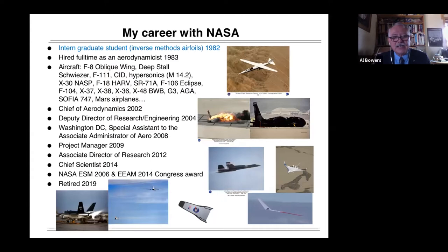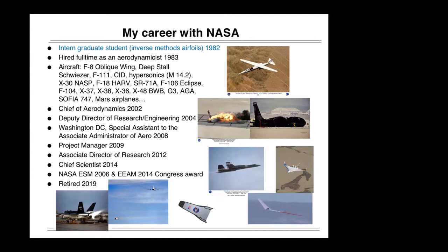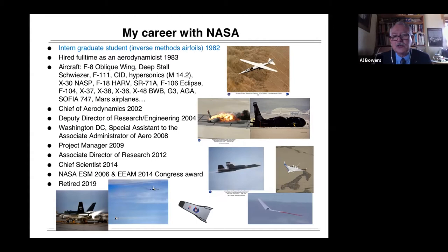That's a list of some of the aircraft that I ended up working on. The oblique wing, the deep stall, F-111 mission adaptive wing, the controlled impact demonstrator. That's the airliner that's crashing there. I was responsible for some of the approach aerodynamics during that particular test. We were testing a fuel that wasn't supposed to burn on impact. And as you can see, that was a failure.